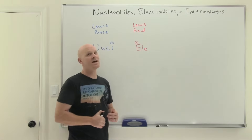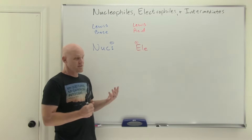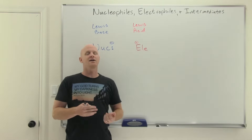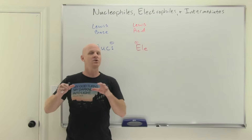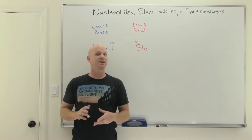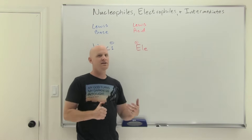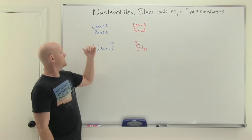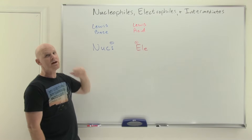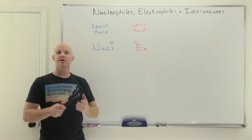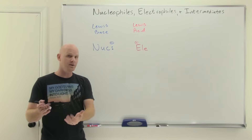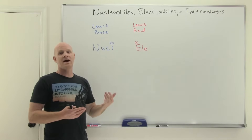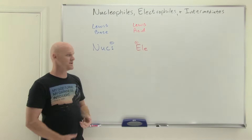We're going to start with nucleophiles and electrophiles. One of the key steps in a mechanism is what we call nucleophilic attack. In a nucleophilic attack step, a nucleophile is going to attack — which really means attach — to an electrophile, forming a bond to it. A nucleophile is a Lewis base, which is an electron pair donor. It donates the electrons used to make the new bond. An electrophile is a Lewis acid, which is an electron pair acceptor — the new bond is made towards it.